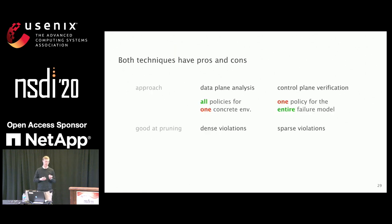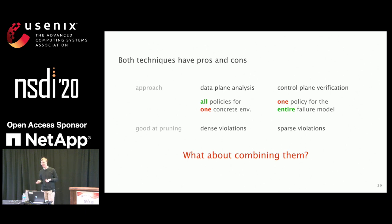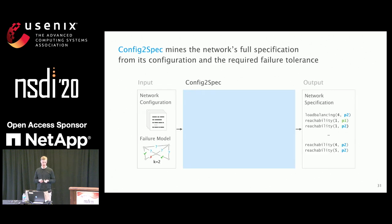Data plane analysis is very good at quickly pruning dense violations because you can just randomly pick one environment and it's very likely you'll prove those policies are not part of the specification. Whereas control plane verification is very good at finding sparse violations — finding an environment that proves the policy doesn't hold. The obvious question is: why don't you combine them? And obviously, yes, we will combine them. This is our approach — config-to-spec consists of two parts.